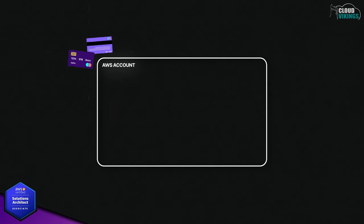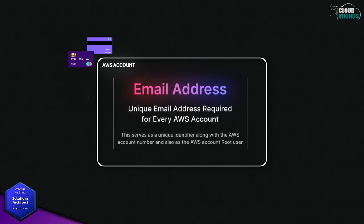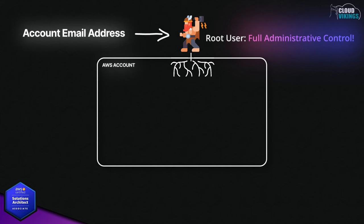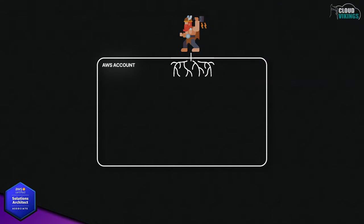The unique identity used to create each AWS account is just an email address. Every AWS account will be tied to a unique customer email address used for important communications from AWS about your account for billing and different administration purposes. This email address also serves as the main account user identity — it's used for what's called the account root user. This root user is a really special user in that it has full administrative control to do anything within and to the account, including changing billing details and completely deleting the AWS account itself.